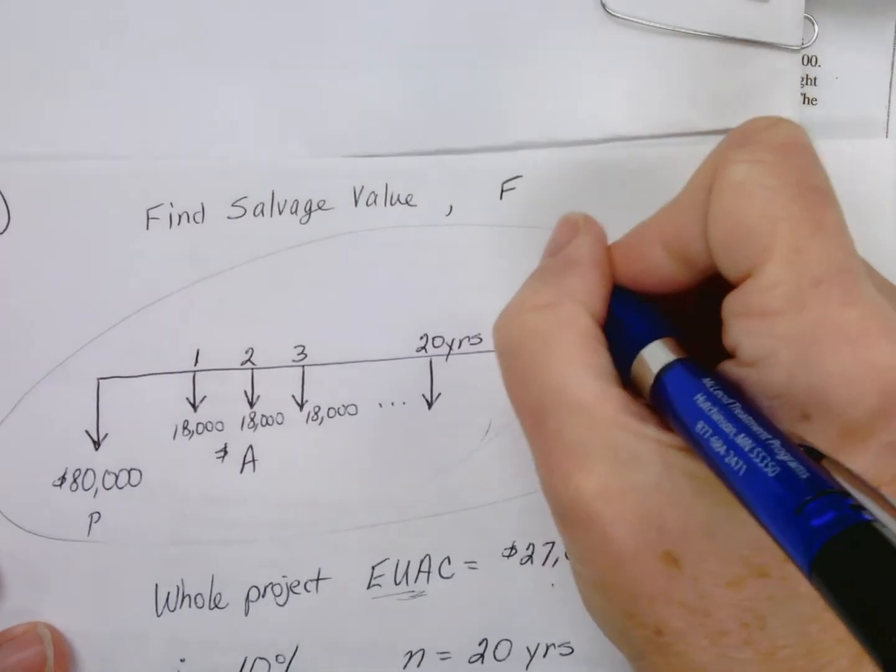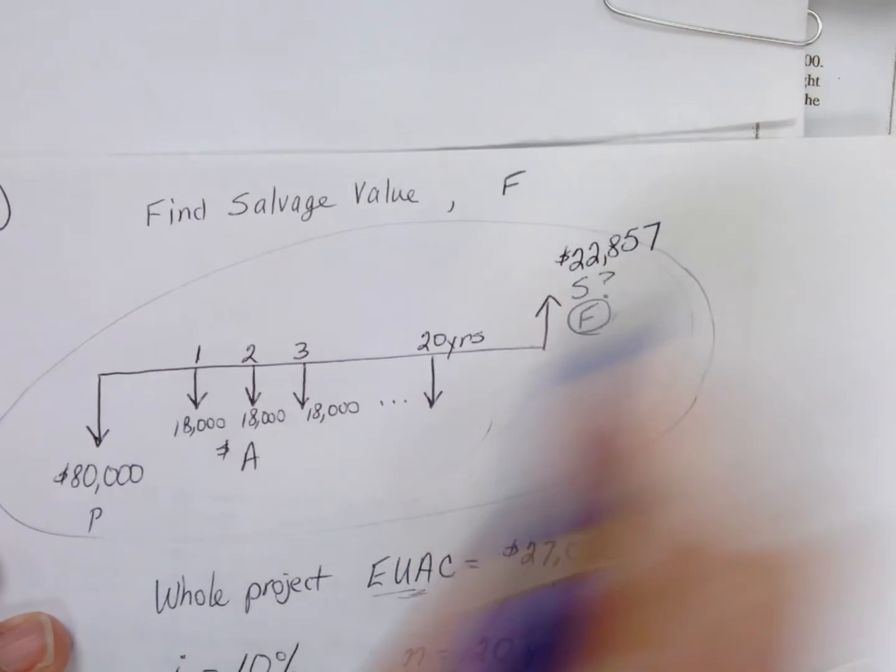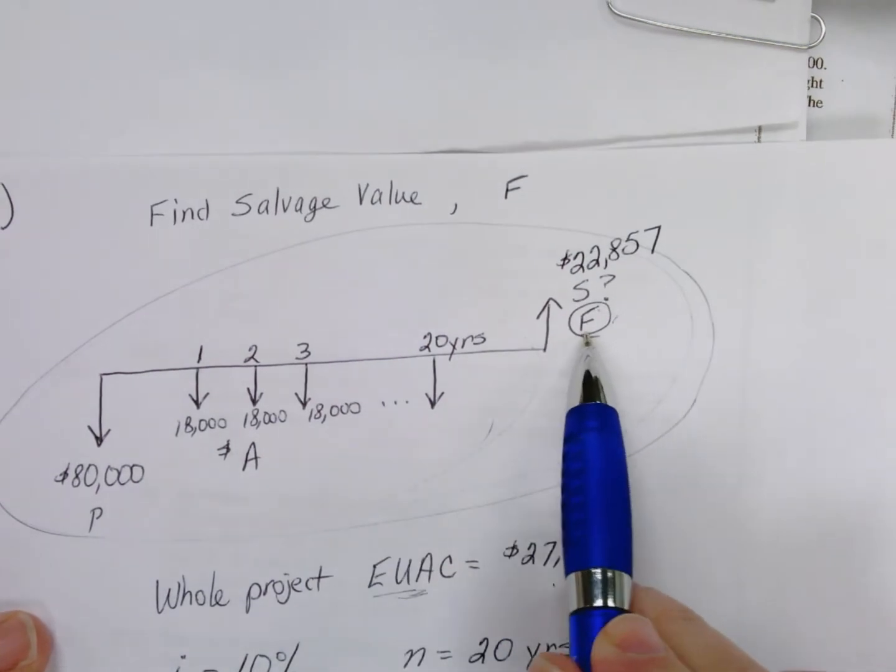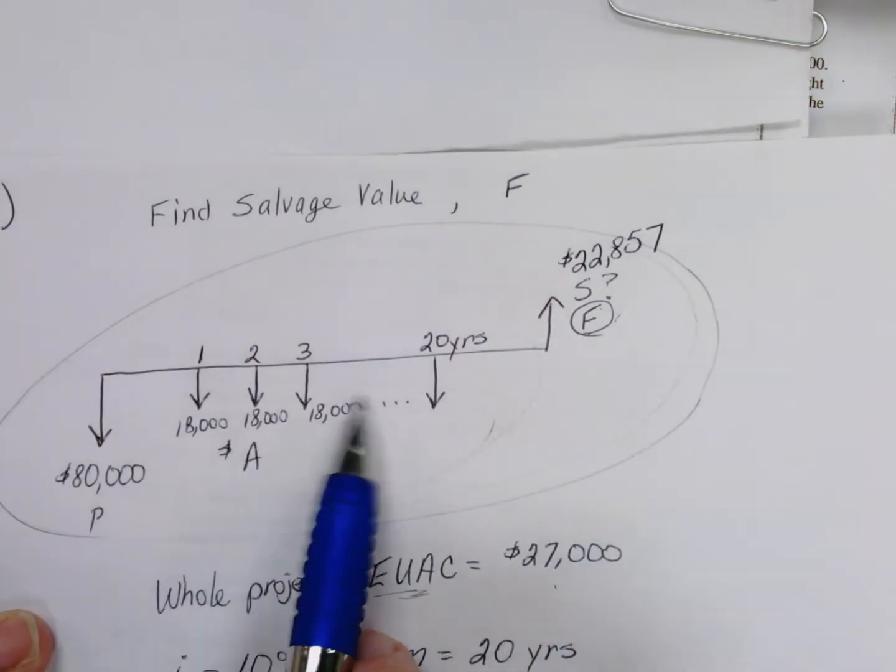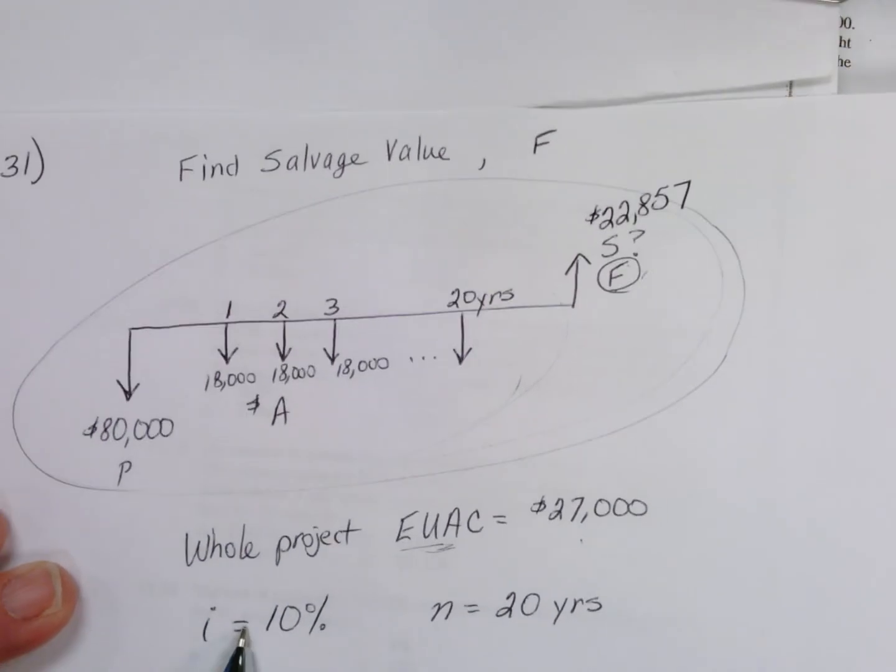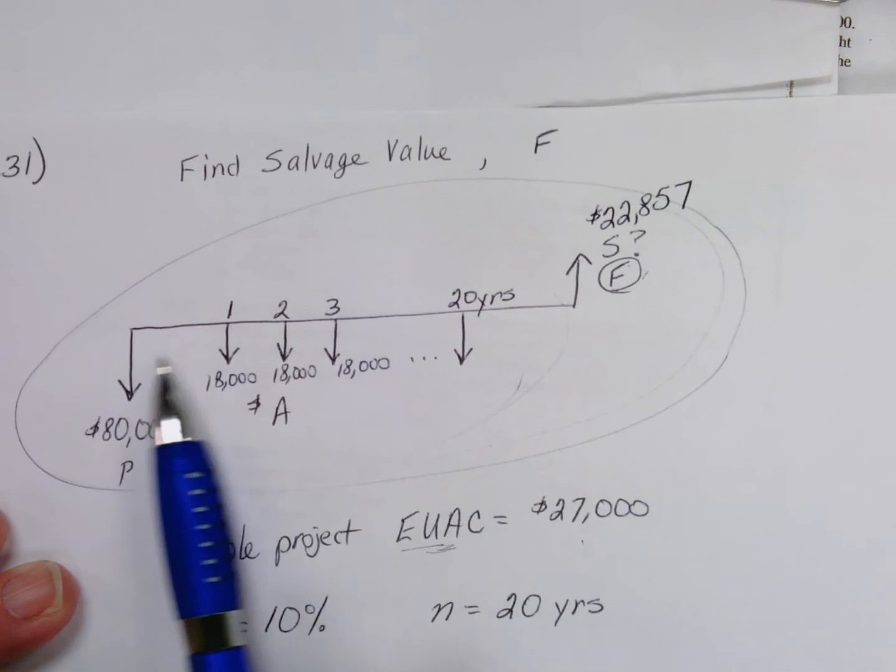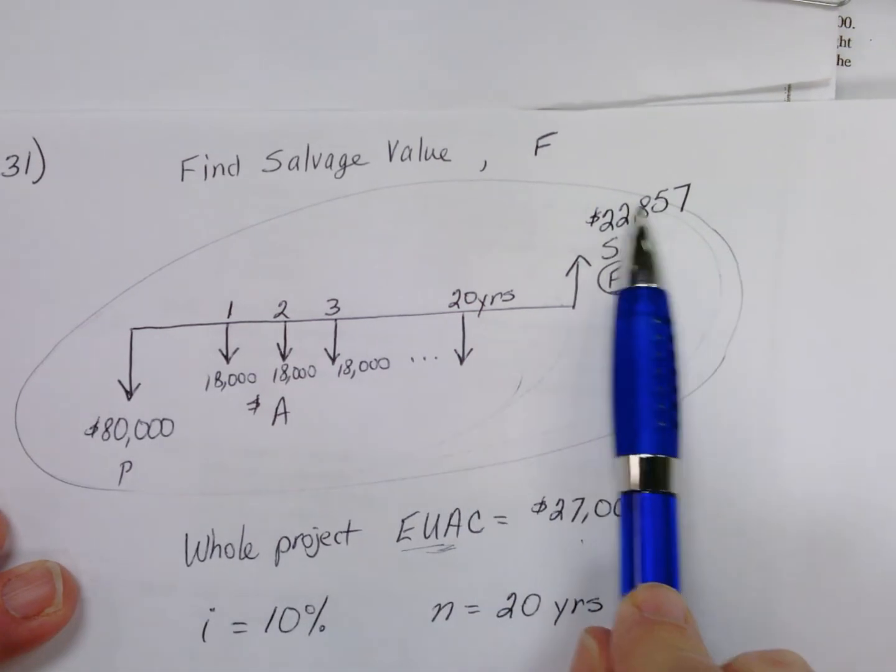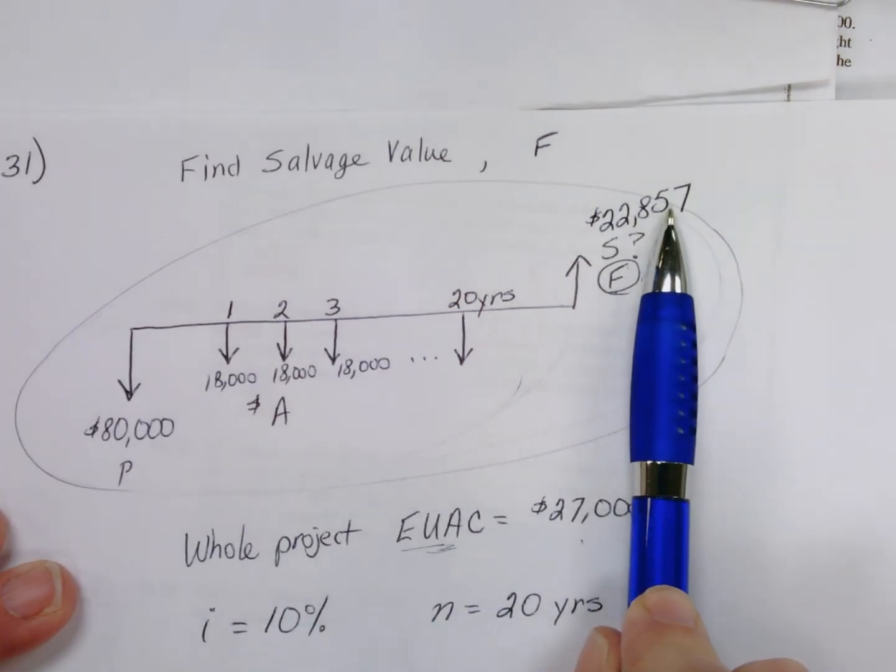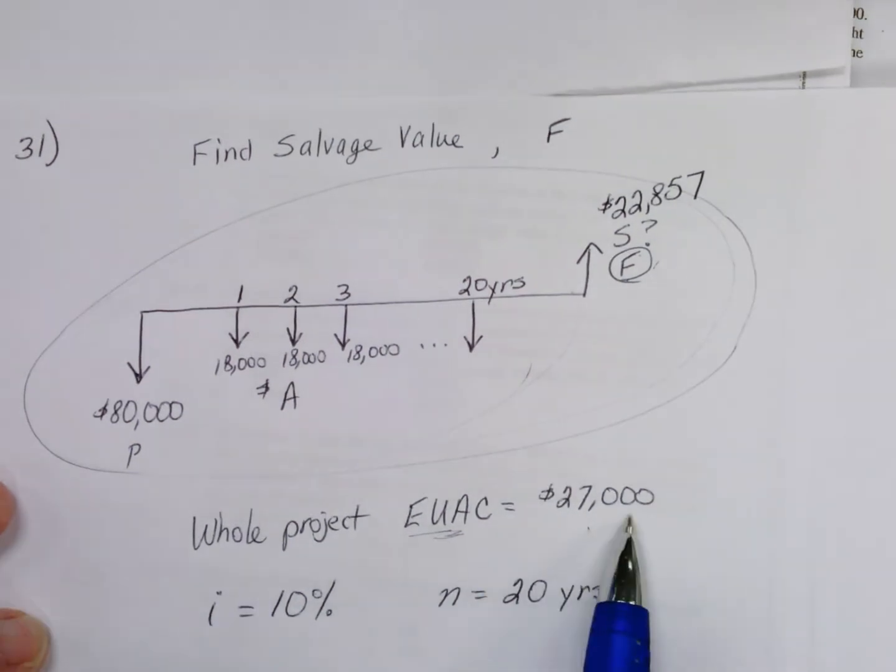That is what we would have to sell that machine for in 20 years' time, given these cash flows over 20 years at a 10% discount rate or interest rate, that would make the cash flows of owning the machine and the other cash flow of getting when you sell the machine, the proceeds received, their equal average then would equal $27,000 average cost per year of owning that machine.